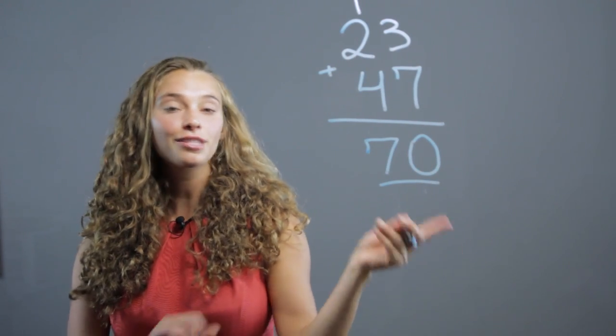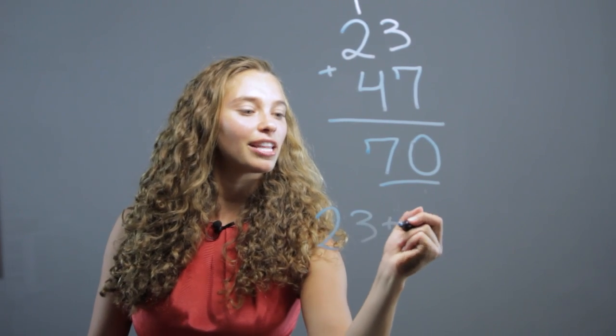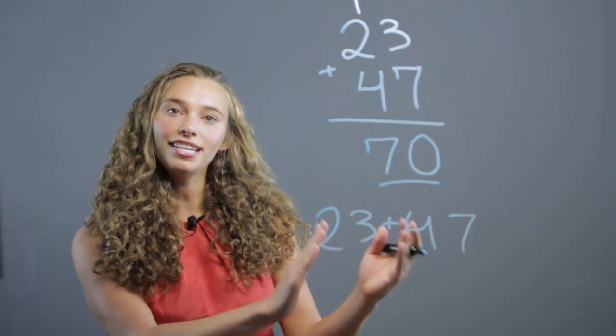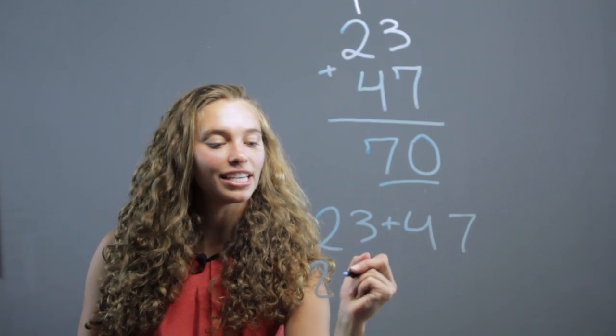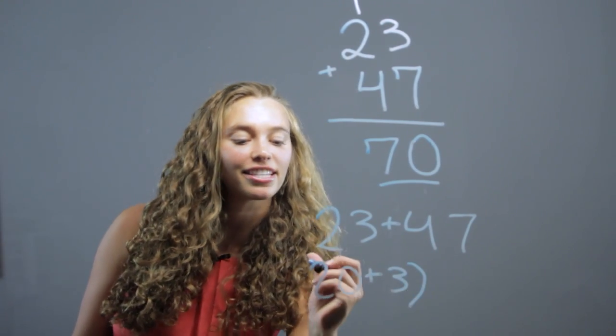So that's without regrouping. With regrouping, we look at twenty-three plus forty-seven. We say, okay, twenty-three is twenty plus three, right? We can all agree on that. Let's put it in parentheses.